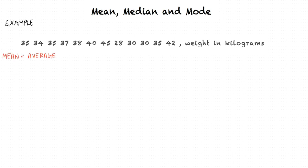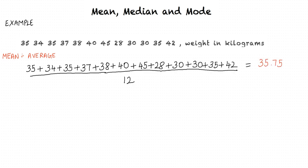Mean is just the average of all the weights. In order to determine the mean of the data set, we take the average of all the values. The mean is 35 + 34 + 35 + 37 + 38 + 40 + 45 + 28 + 30 + 30 + 35 + 42, all divided by 12, which equals 35.75. This means the average weight of the boys is 35.75 kilograms.